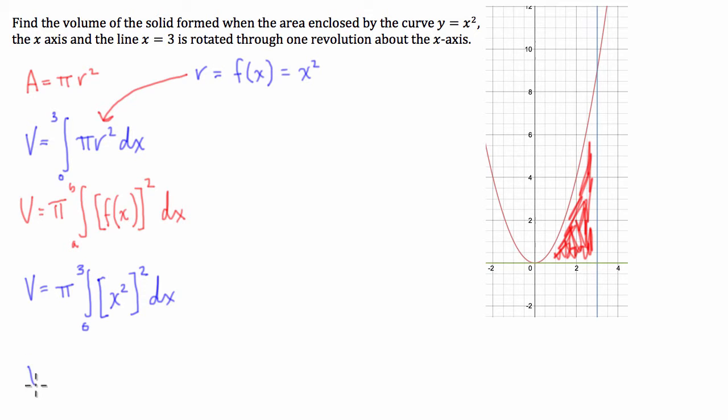So what we're left with then is the volume is going to be equal to pi times the definite integral from 0 to 3 of x squared squared. So the indices will multiply, and we're going to have x to the power of 4 dx. Now, from here, all we have to do is actually evaluate the integral.